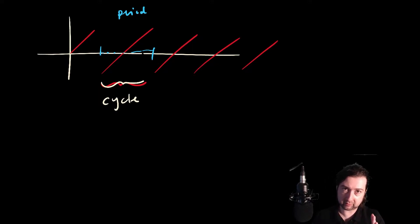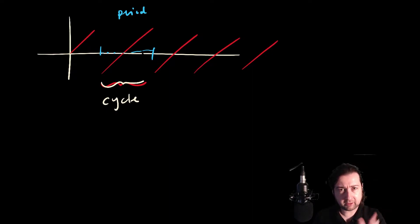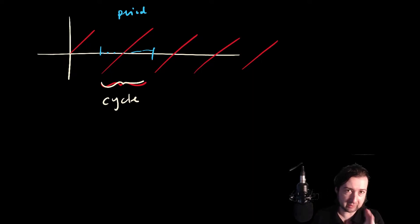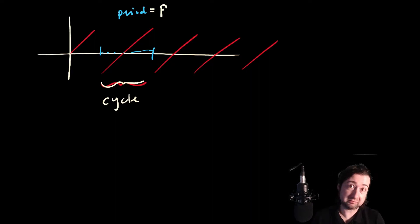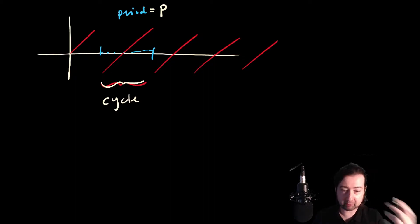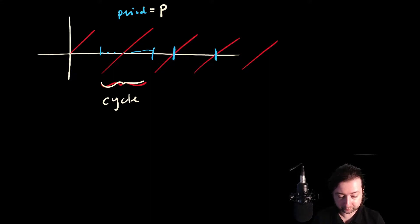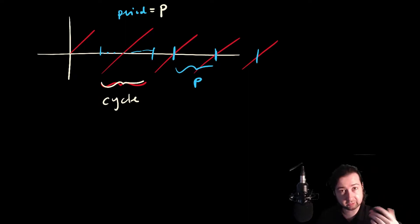The period is the difference in the x-values or t-values that tells you how long it takes a function to go through one cycle. You shouldn't think the period has to be set from beginning to end. As long as you keep the length the same — say that period is of length p — then putting a length p anywhere inside a periodic function still gives you a repetition. The cycles may look different, but the period is the same and the function still repeats itself.